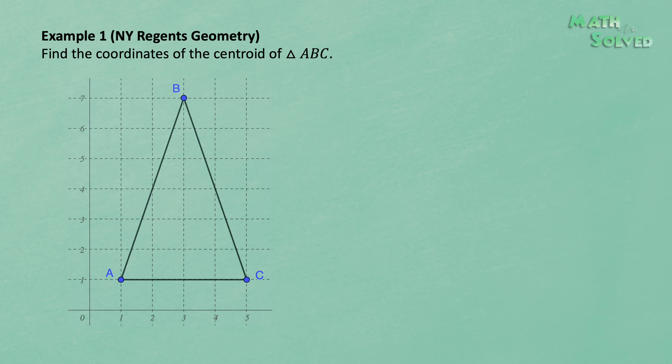In the last video, we proved that the centroid divides the median into 2 over 1. And in this video, we are going to look at the first example.